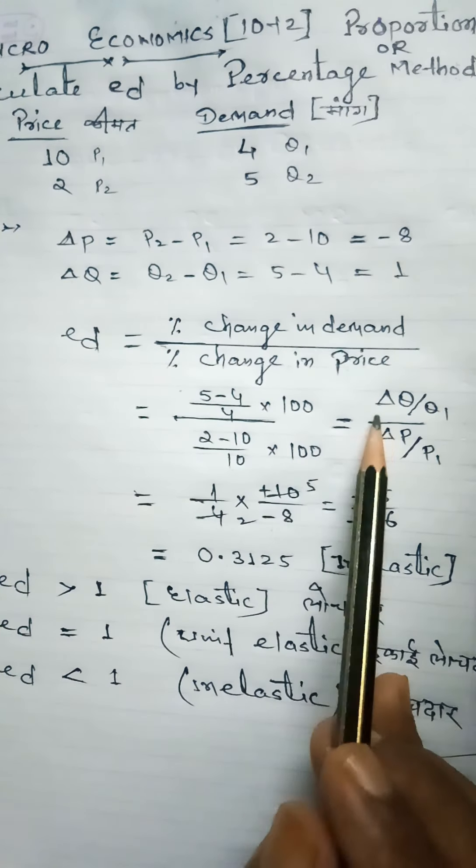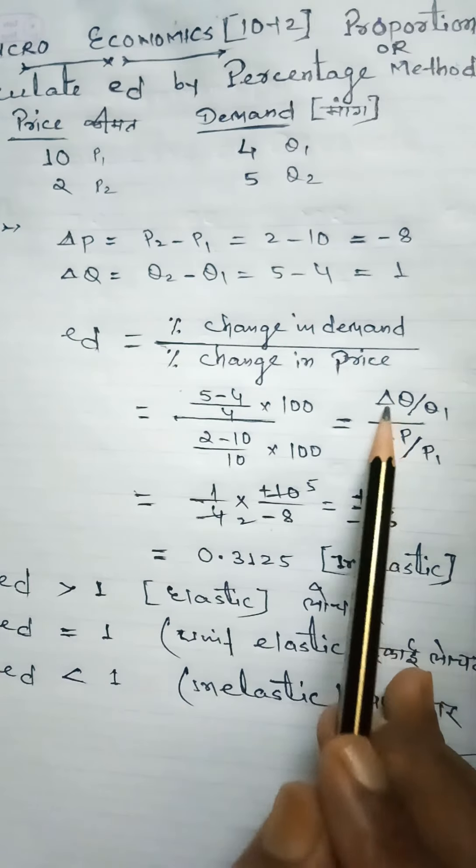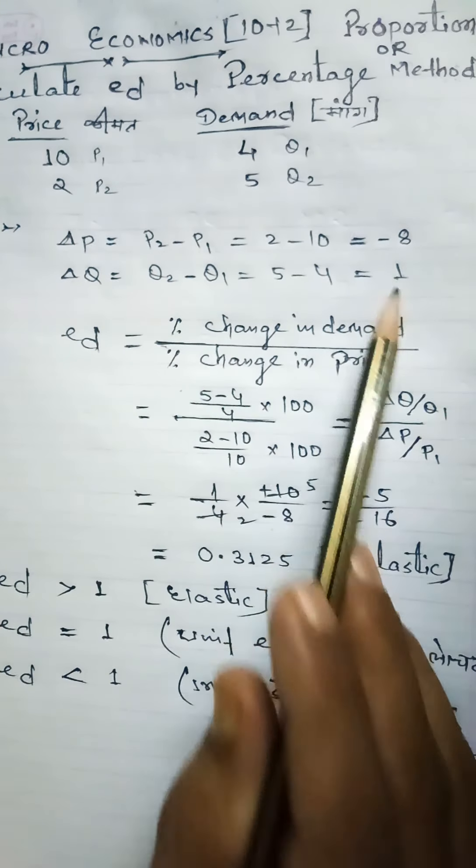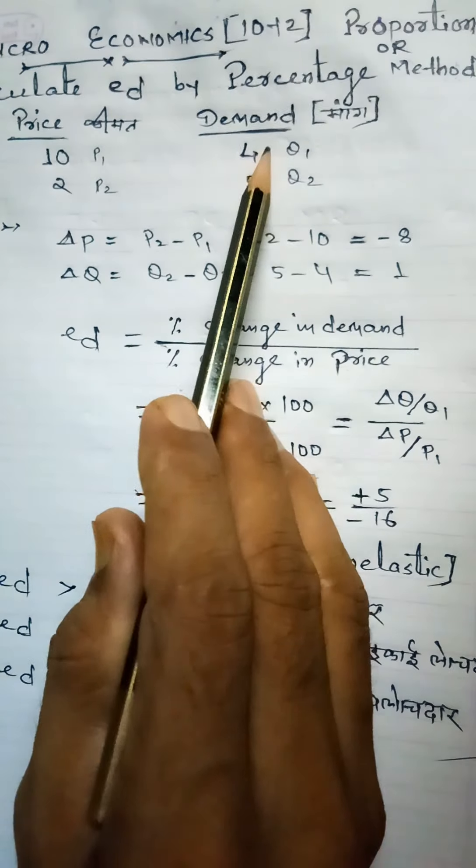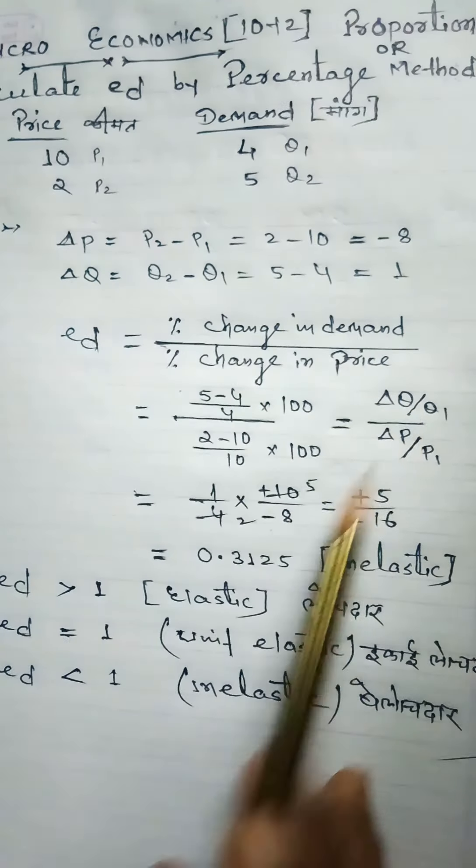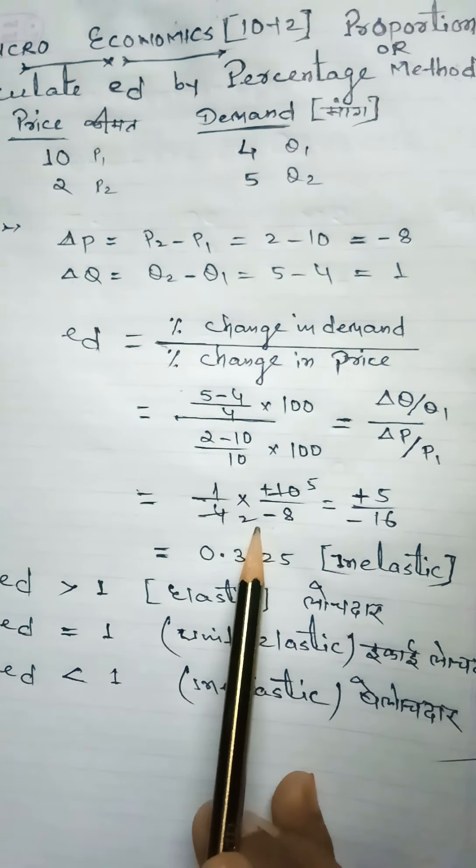For the proportionate method: del-Q by Q1 divided by del-P by P1. Del-Q equals 1, Q1 equals 4, del-P equals minus 8, and P1 equals 10. Using the proportionate method to solve: